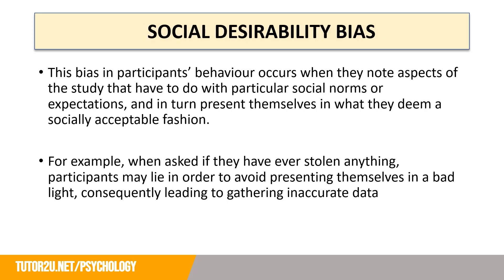Another concept which is good to talk about, particularly on things like interviews, questionnaires, or observations, is social desirability bias. Social desirability bias occurs when the participant notes aspects of the study that relate to particular social norms or expectations, and then presents themselves in what they deem a socially acceptable fashion. For example, when asked if they've ever stolen anything, participants might lie in order to avoid presenting themselves in a bad light, consequently leading to inaccurate data.